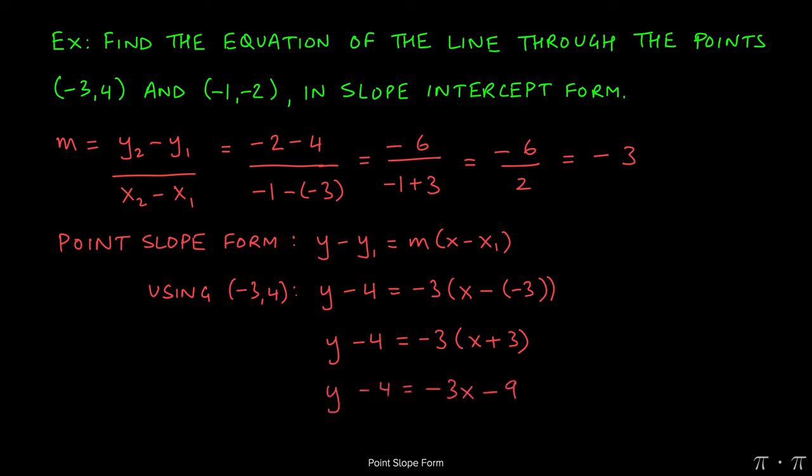So we can distribute the -3 into the x plus 3. Negative 3 times x will give us -3x. Negative 3 times 3 will give us -9. At this stage, all we need to do is simply move this -4 over to the right-hand side.